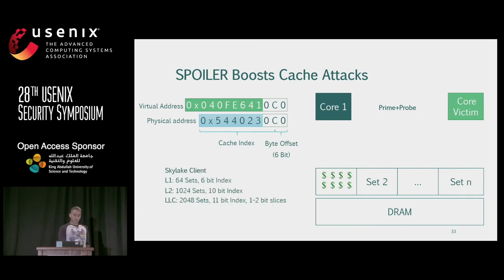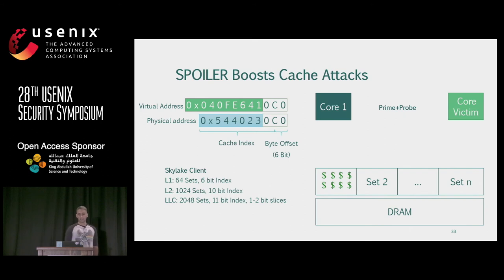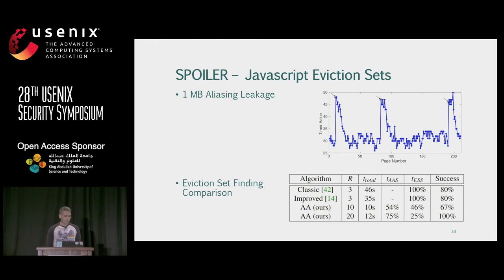Previous work either assumed misconfiguration, made assumptions about physical addresses, or brute-forced eviction sets. But if we know physical page number information, we can create eviction sets much faster and more reliably. On Intel processors, we use the upper bits after the 6-bit offset to map to cache sets — those bits differ between virtual and physical addresses. With SPOILER, we learn another 8 bits, giving us 14 bits total, making eviction set creation much faster. We implemented this in JavaScript and got a good speed-up and accuracy, though not the full 256x seen in native environments. Check the paper for detailed comparison results.